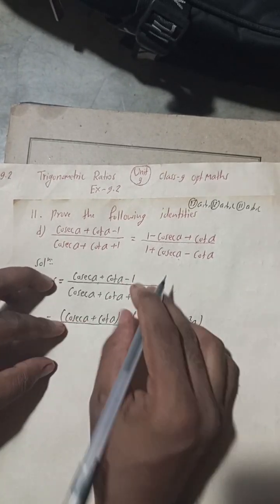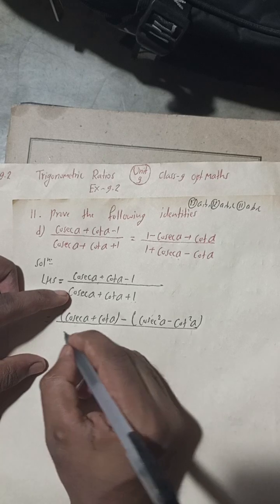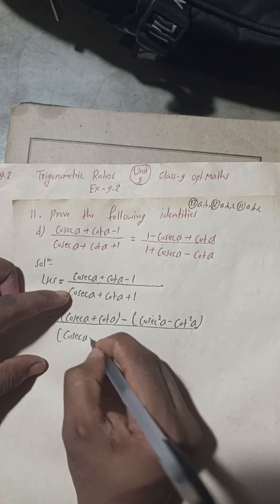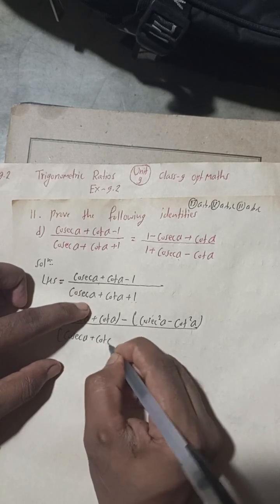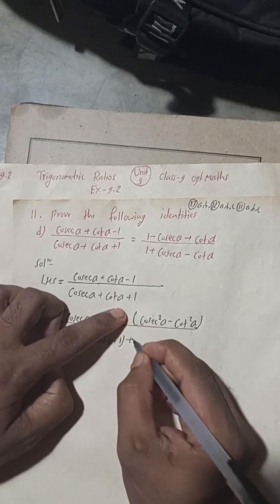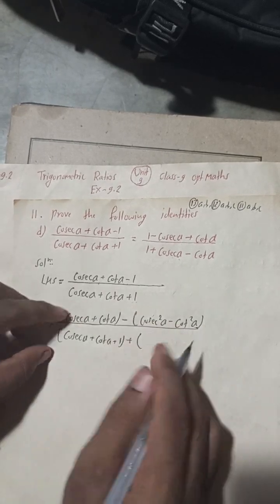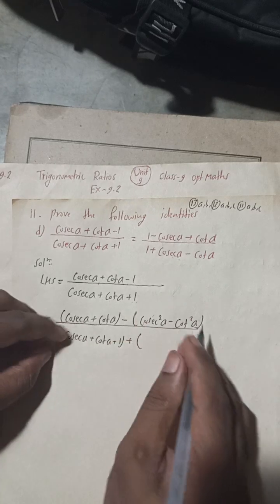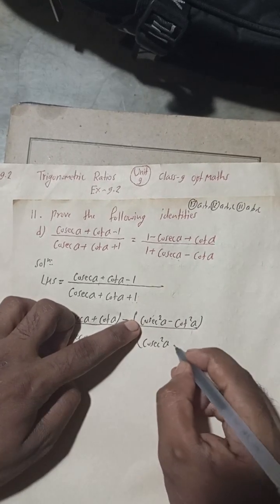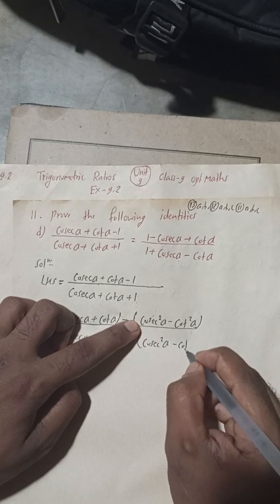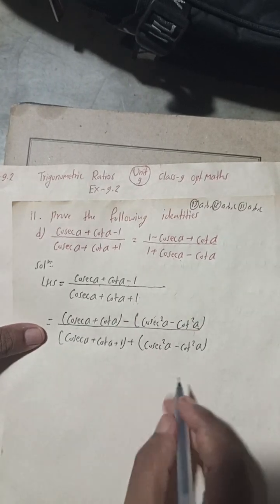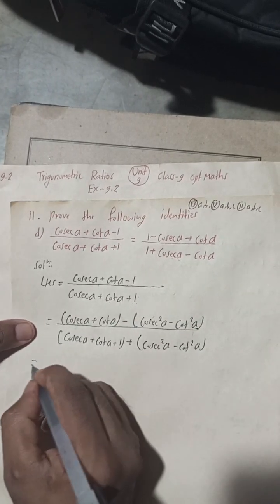The formula cosec²α - cot²α = 1 is used, so we have written 1 as cosec²α - cot²α. In the same way, for the denominator, cosec α + cot α plus 1, we again write 1 as cosec²α - cot²α.